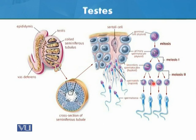These are spermatids, and these spermatids are then transformed — or metamorphosed — into sperms. This is the process of sperm production in the testes.